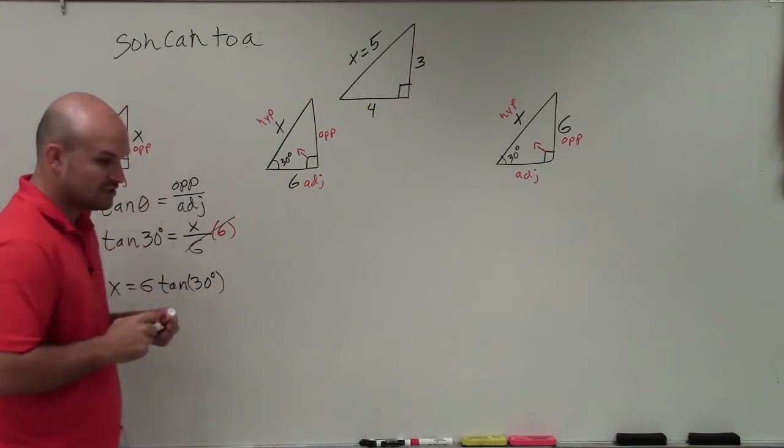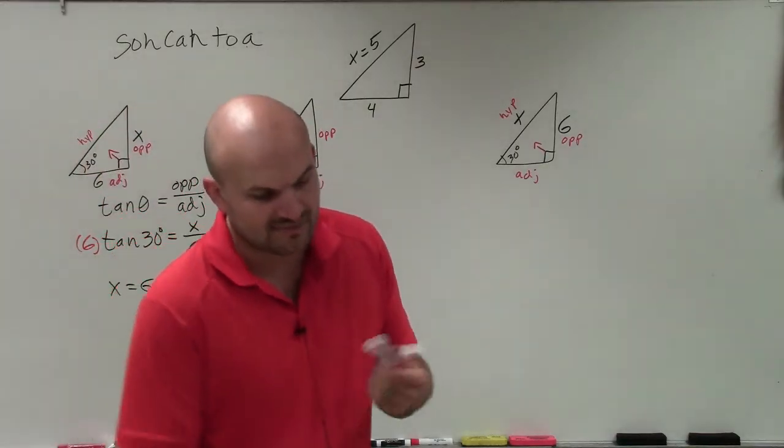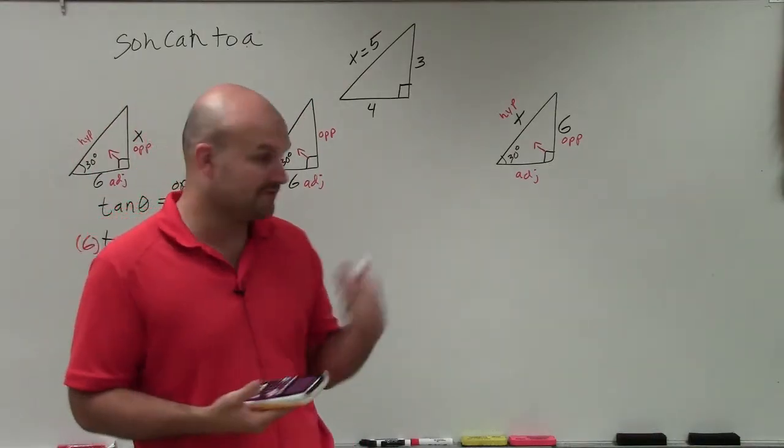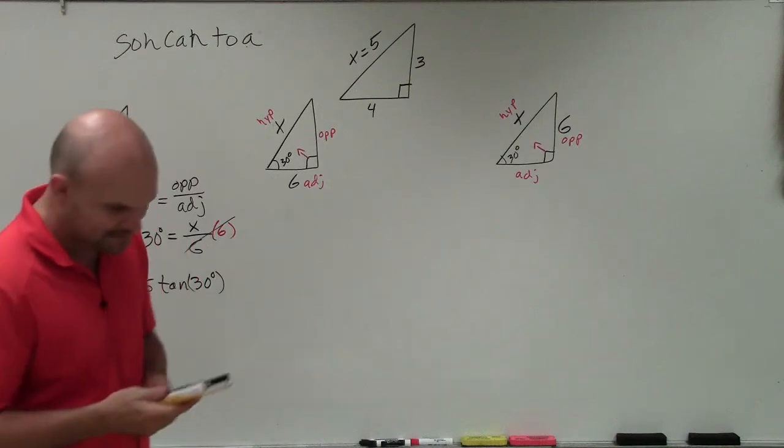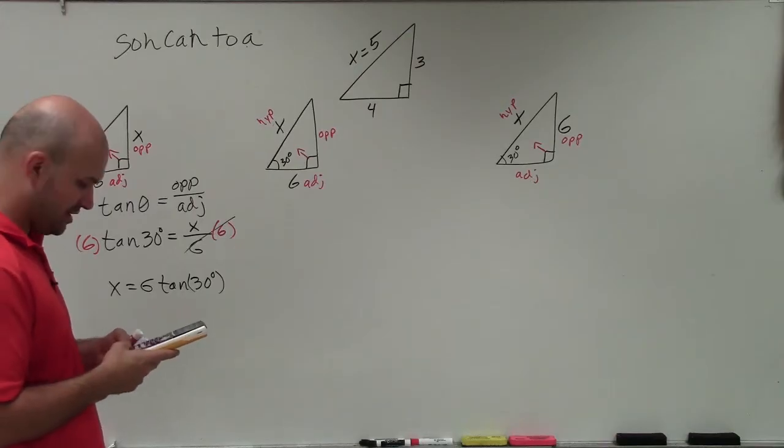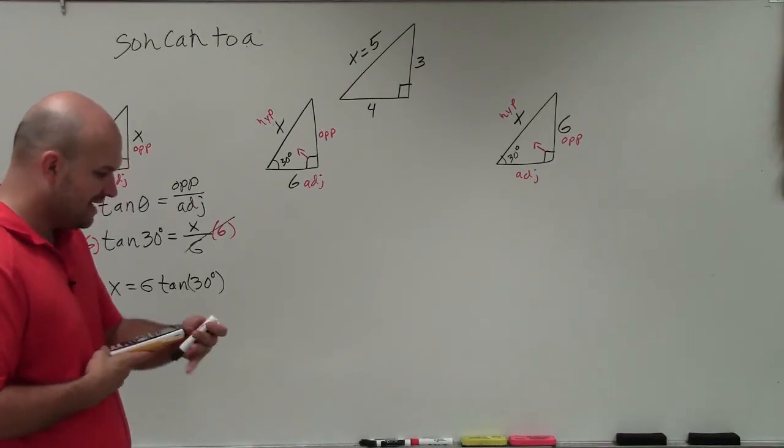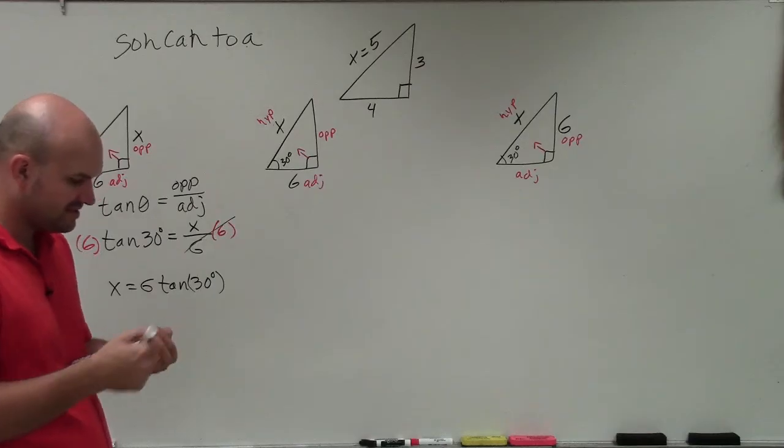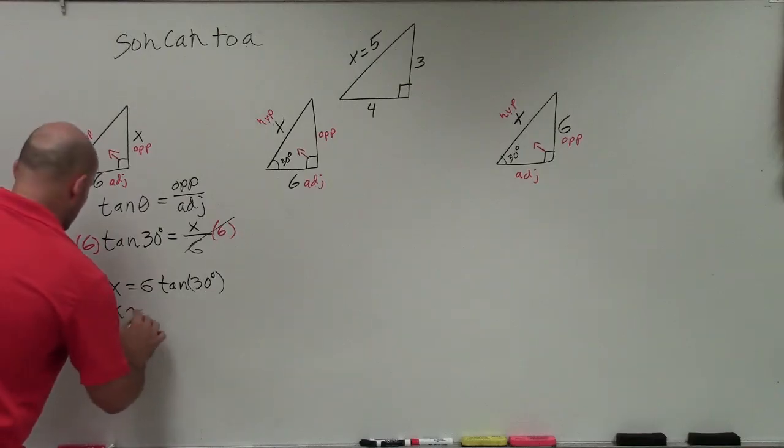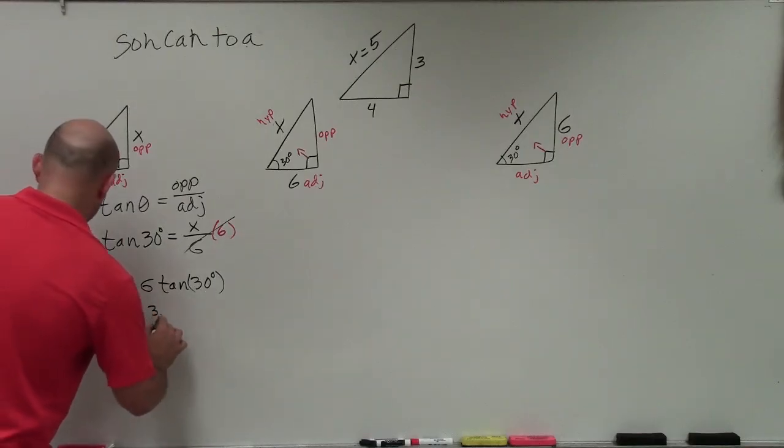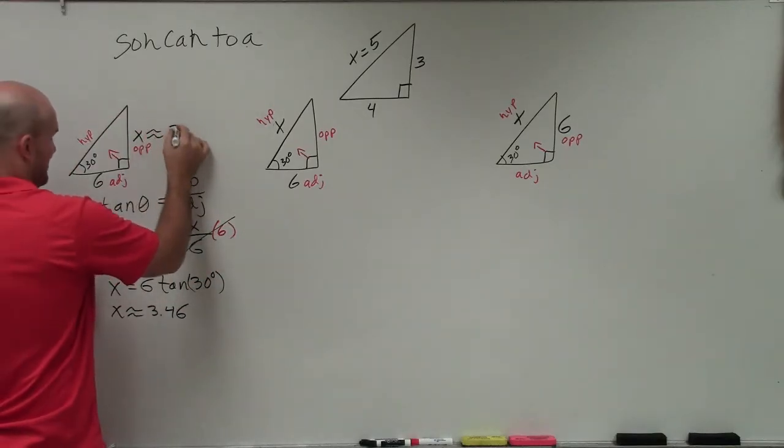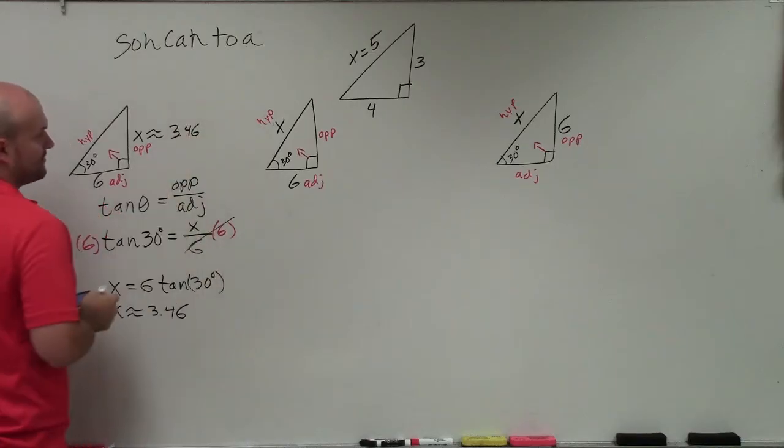Notice our angle is in degrees. So when we're evaluating using a scientific or graphing calculator, you want to make sure that your mode in your calculator is also in degrees. If you are doing angles in radians, then you change it over to radians. I'm simply going to do 6 times the tangent of 30 degrees. When I do that, I get approximately 3.46. I'm just going to round to the 100th decimal. So I'll have x is approximately 3.46. Therefore, that opposite side is approximately 3.46.